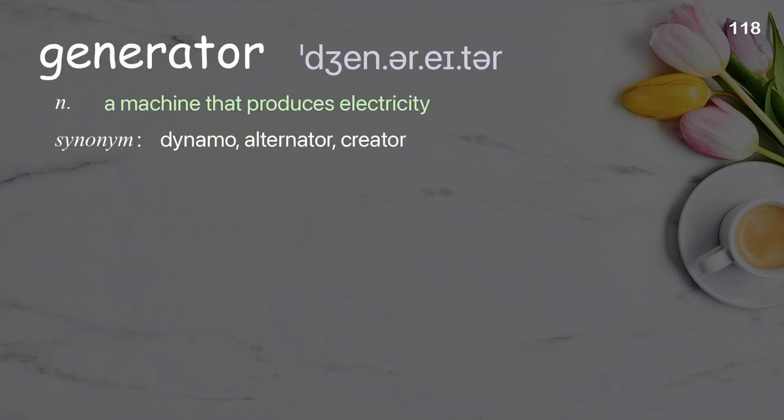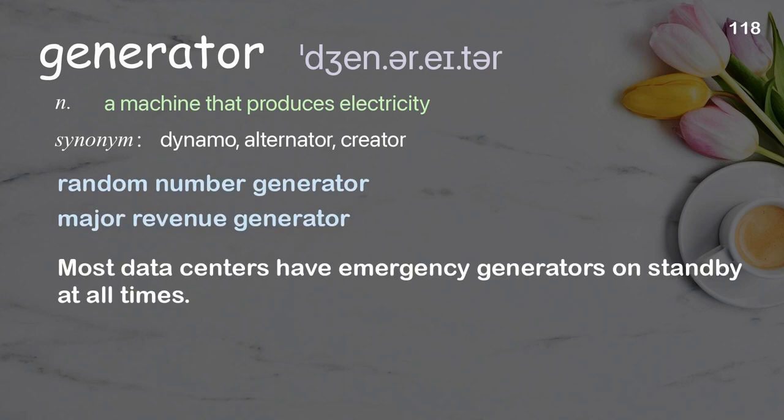Generator: a machine that produces electricity. Examples: random number generator, major revenue generator. Most data centers have emergency generators on standby at all times.